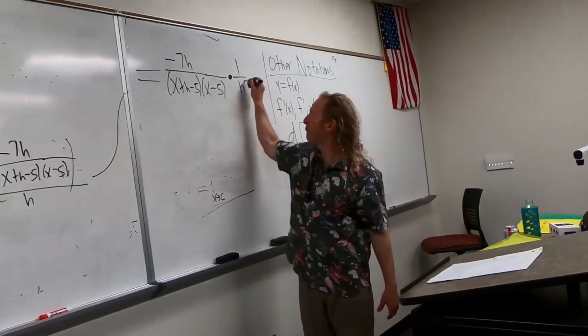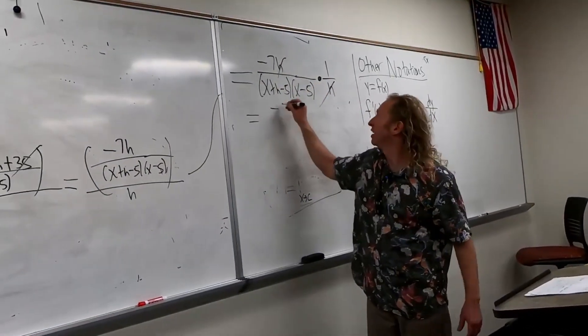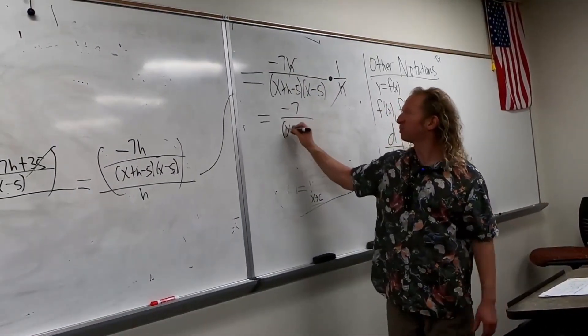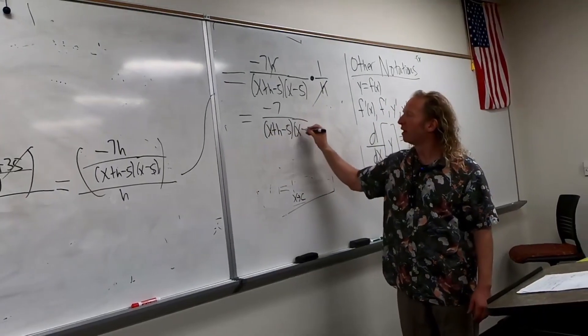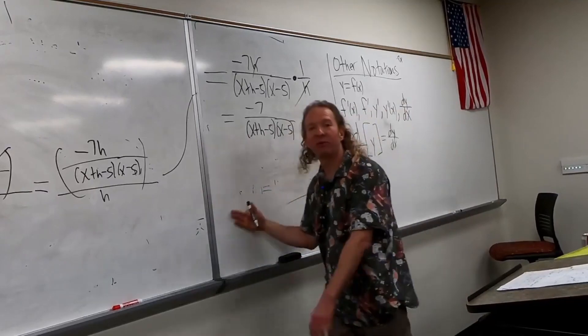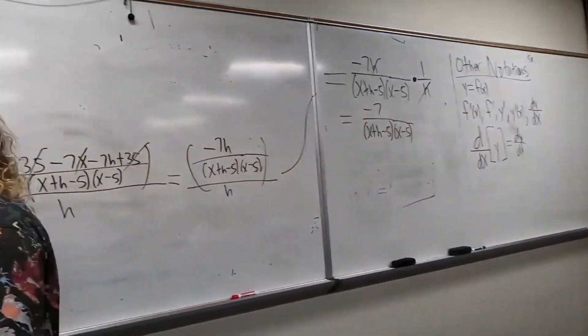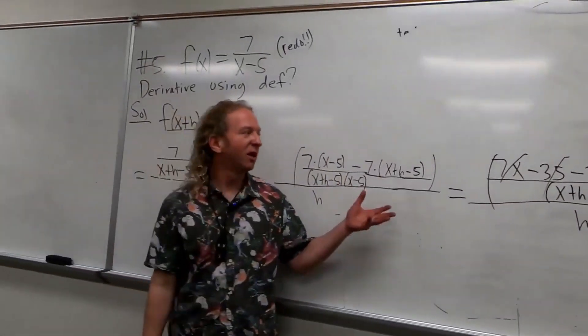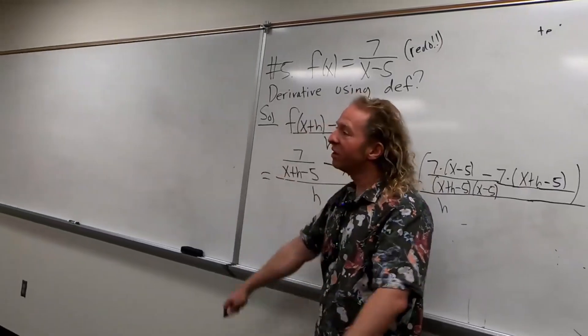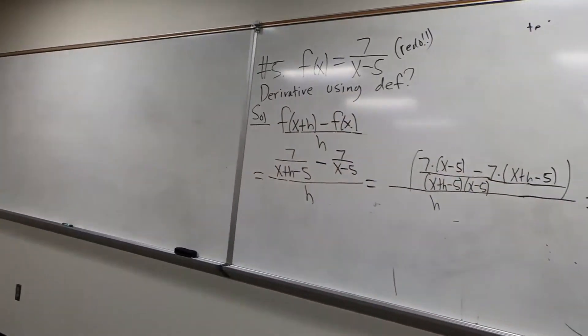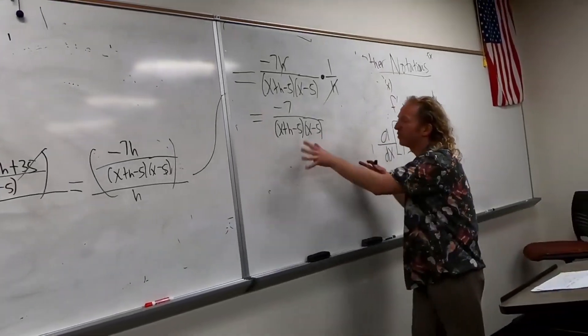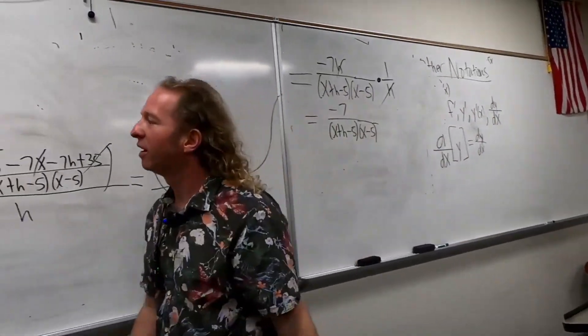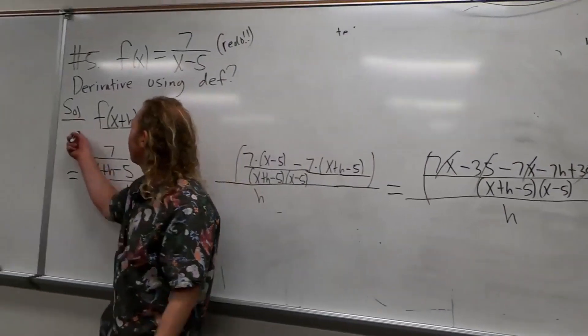And these cancel. So, we get negative seven over (x plus h minus five)(x minus five). So, we're almost done. We're almost done. It's like, the last step is just like a formality. It's just answering the actual question. So, this is the slope of the secant line. So, to finish, we just have to do something with this. I erased the formula. But what's missing here to have the formula? What do you have to put?